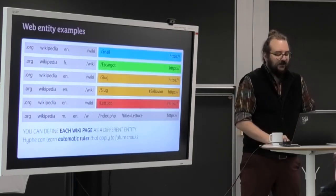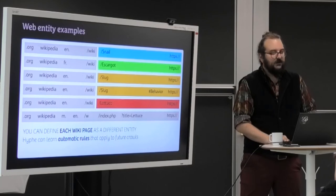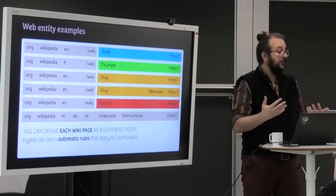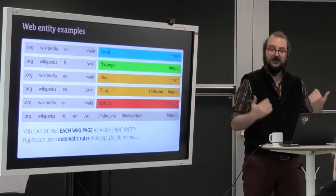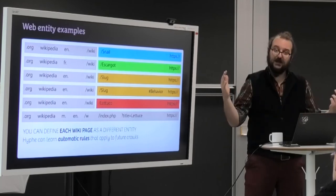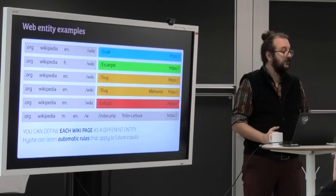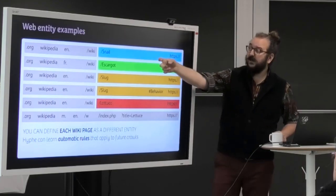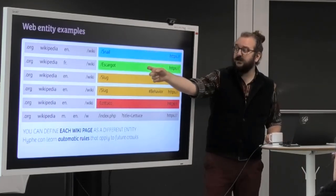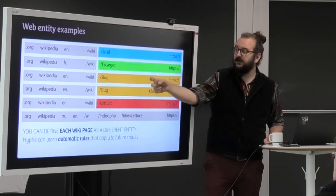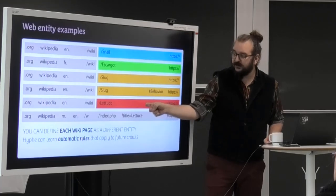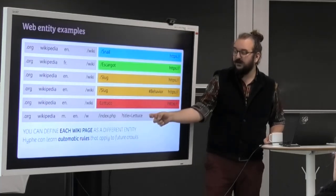And you can define automatic rules. So this is the typical case on Wikipedia. You could want to have the different pages or the different Wikipedia articles as different web entities. And you can actually do that pretty easily in Hive. And then you would have slash snail as one entity, slash escargot as another entity. The two slash slugs, they will be the same web entity. That's why they have the same color. And slash lettuce will be a different entity. And if you do that this way, the mobile version will be out of the rules because the rules here.